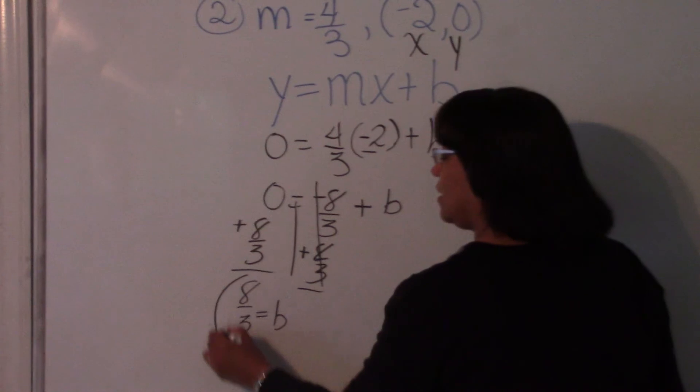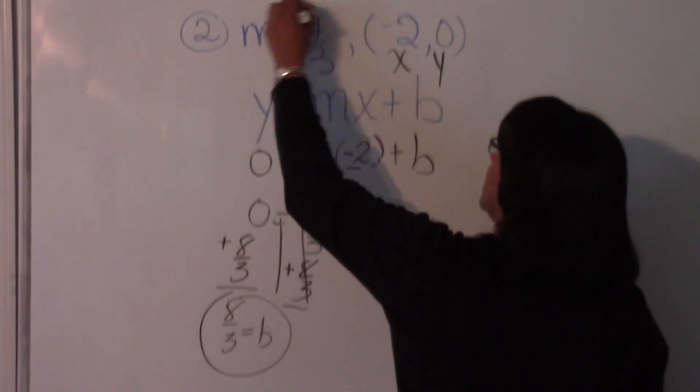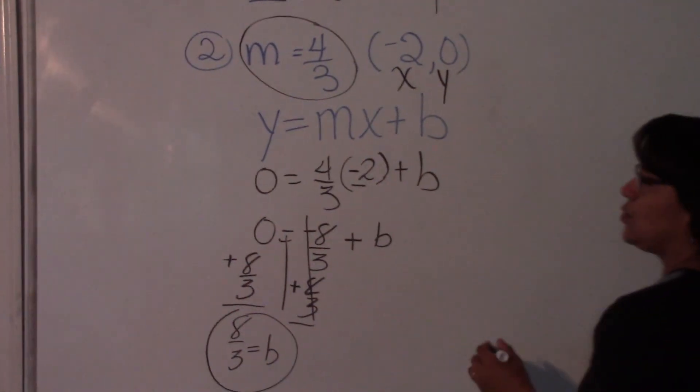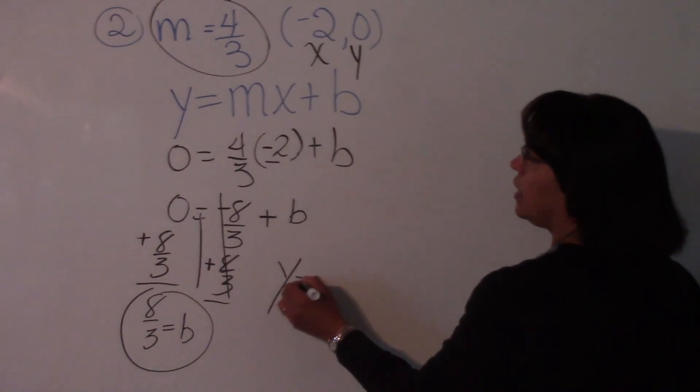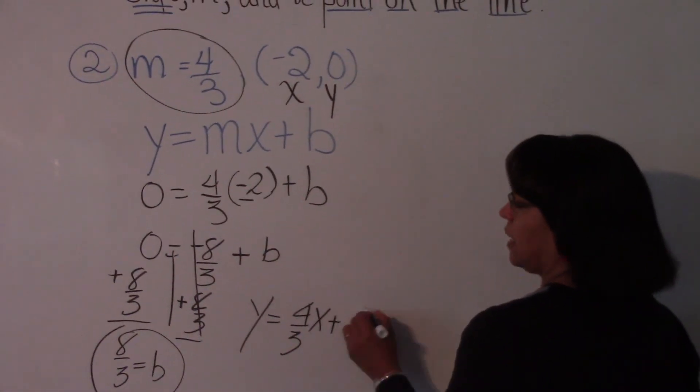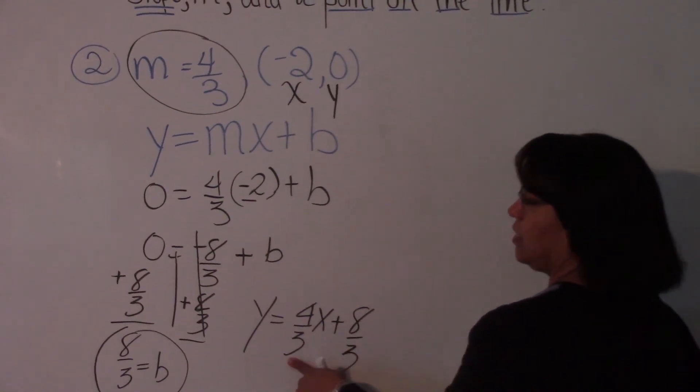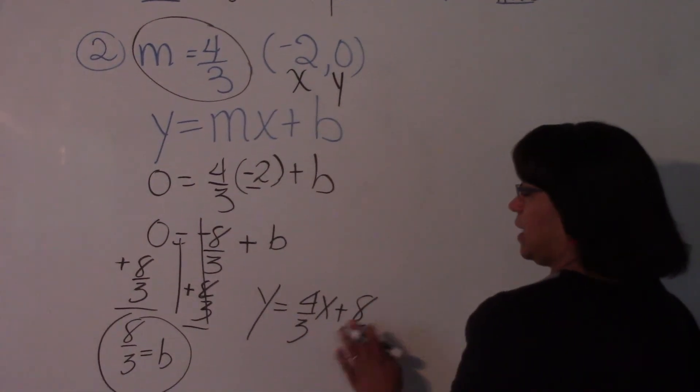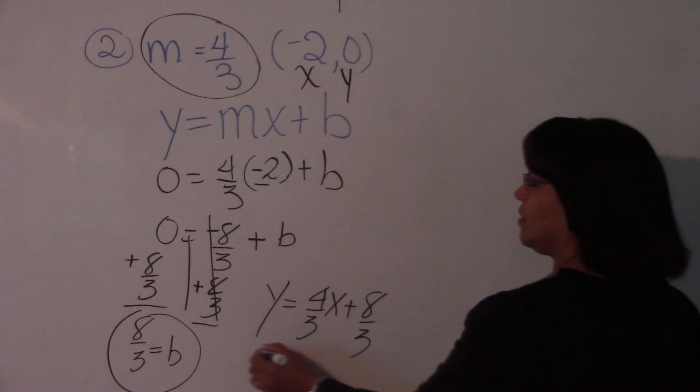Now you have your m, and you have your b. So now you can plug it into slope-intercept form. y is equal to 4 thirds x plus 8 thirds. m was 4 thirds, and b was 8 thirds. So this is your answer.